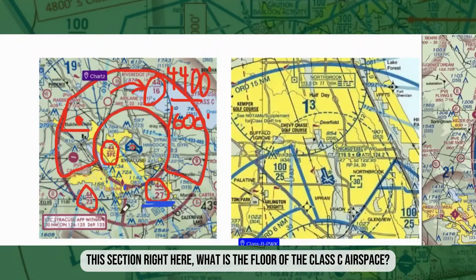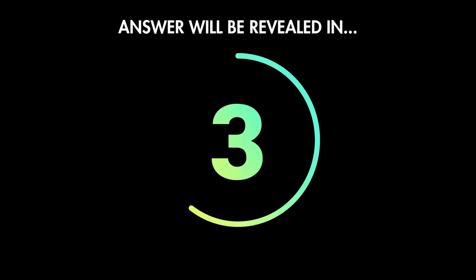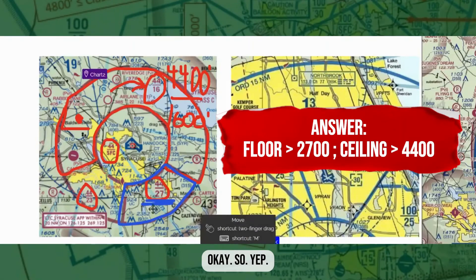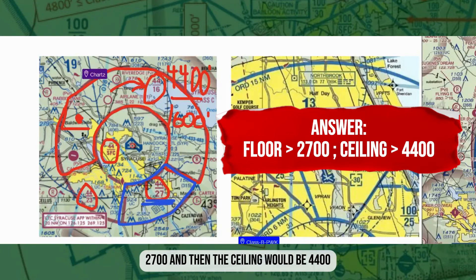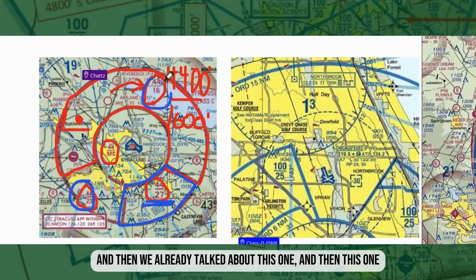Looking at this other section: the floor of the Class C airspace here is 2,700 and the ceiling would be 4,400. Over here we've got 2,300 and 4,400.